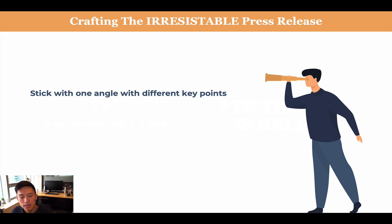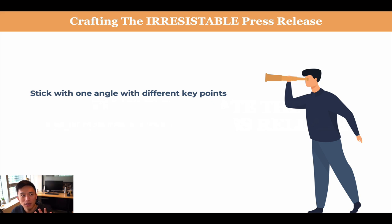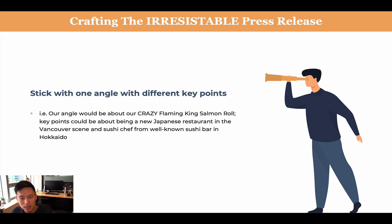A key insight is that a lot of times we would have so many different things we want to share with journalists — we want to tell them how great our brand is, the associations we have, the charities we support, the new item we have, and the new location. However, when we're talking to press and journalists, we want to stick with just one talking point and really, really focus on that talking point.